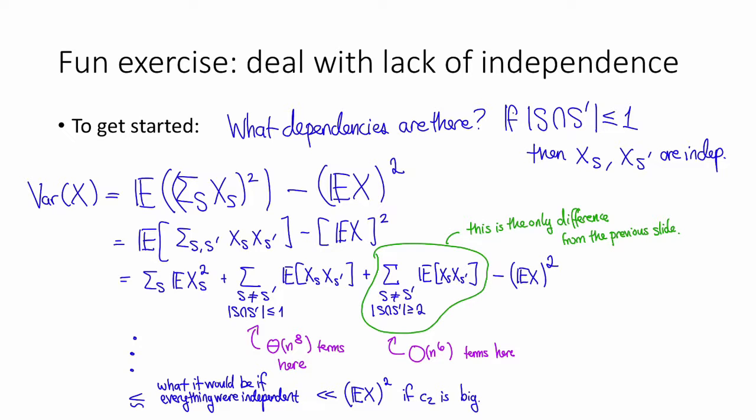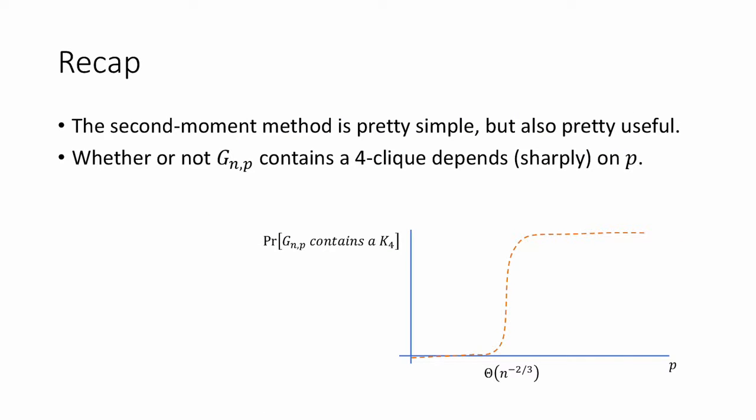Obviously, I've skipped a lot of details here — it's a really good exercise to work them out. Doing this will also demonstrate the flexibility of the second-moment method: even when it's tricky to compute the variance exactly, bounding it often turns out not to be so bad. To recap: the second-moment method seems pretty simple, but it's also really useful. As a quick example, we saw that whether G(n,p) contains a 4-clique depends sharply on p, with a threshold around n to the minus two-thirds. Thanks for watching.